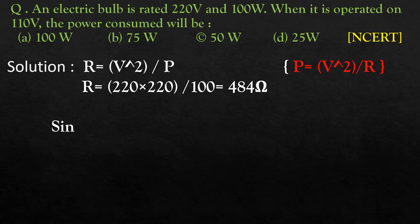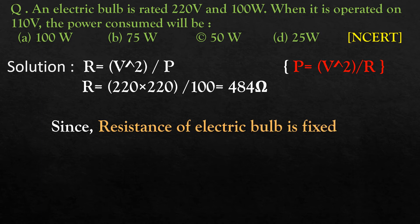One thing to note: the circuit is not changing. If the circuit is not changing, what will happen? The resistance will not change. It will remain the same. So resistance of electric bulb is fixed.